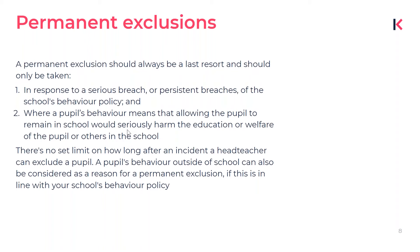Permanent exclusions should always be a last resort, and should only be taken when two things are true: it has to be in response to a serious breach or persistent breaches of your school's behavior policy, and that pupil's behavior means that allowing them to remain in school would seriously harm the education or welfare of the pupil or others. There's no set time limit on how long after an incident a head teacher can exclude a pupil, and behavior outside of school can also be considered, but only if that's in line with your school's behavior policy.